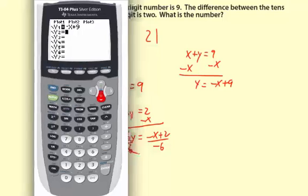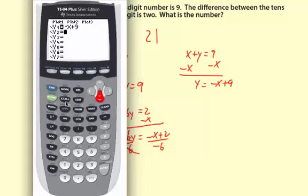Second equation is y equals, and I'm going to put open parentheses, because I'm going to put the entire numerator divided by negative 6. So open parentheses, negative x plus 2, close parentheses, divided by negative 6, just like that.